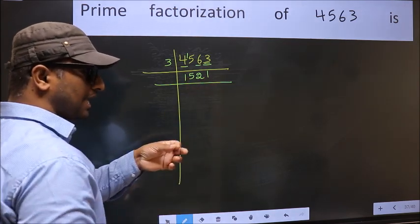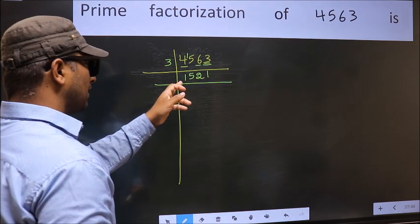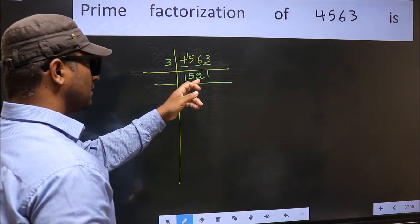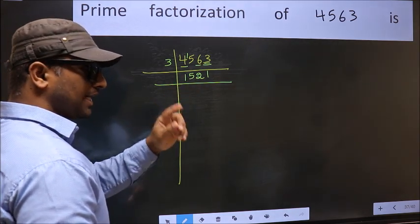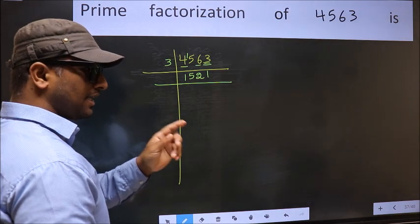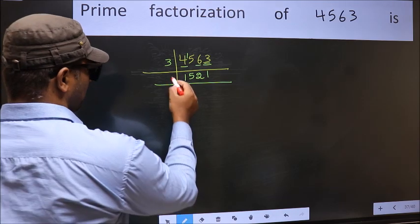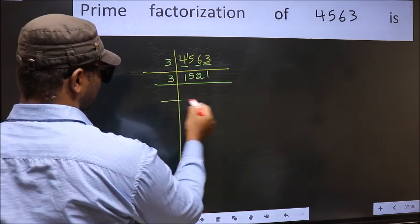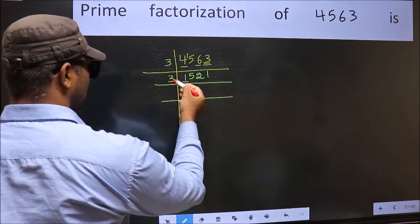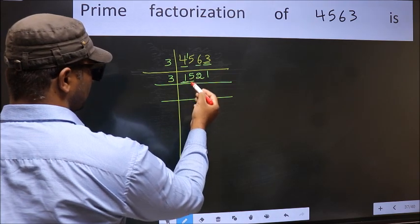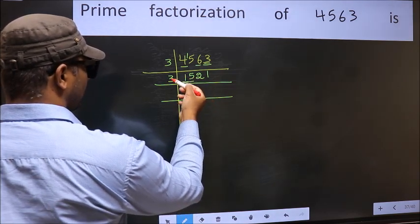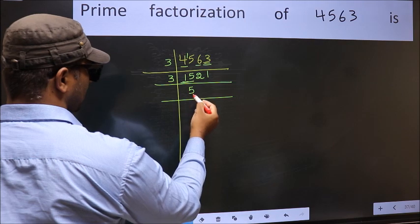For that add the digits. 1 plus 5 plus 2 plus 1. We get 9, and 9 is divisible by 3. So this number is also divisible by 3. So take 3. First number 1 smaller than 5, so 2 numbers, 15. When do we get 15 in the 3 table? 3 times 5 is 15.